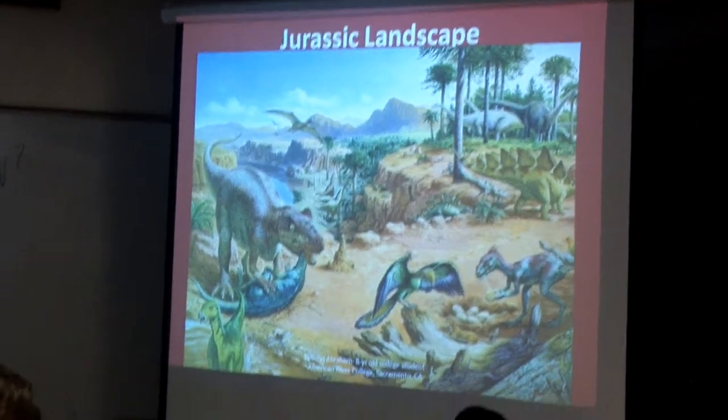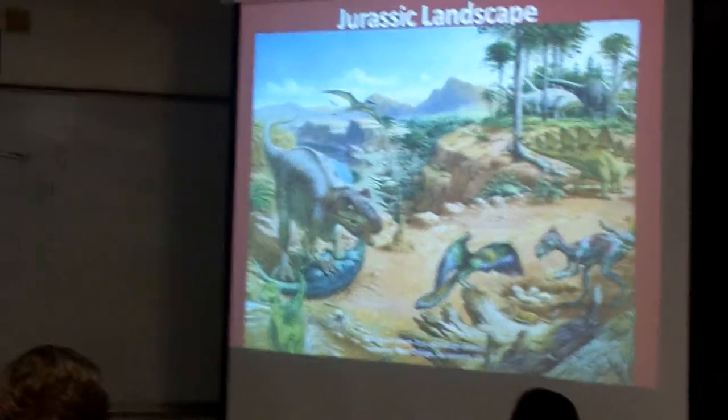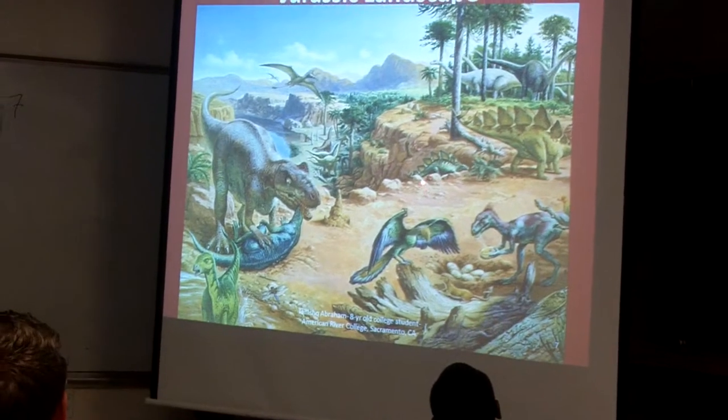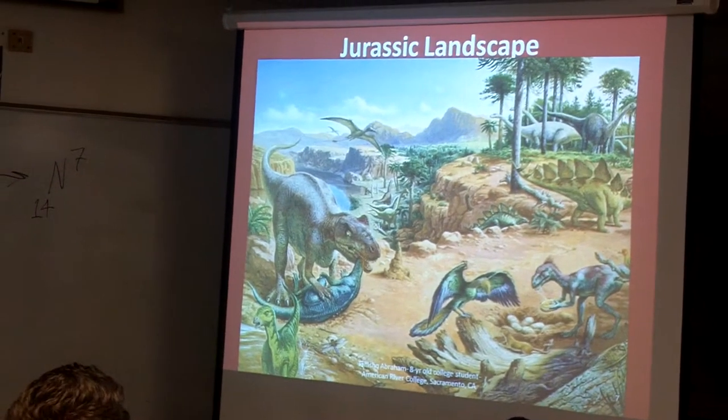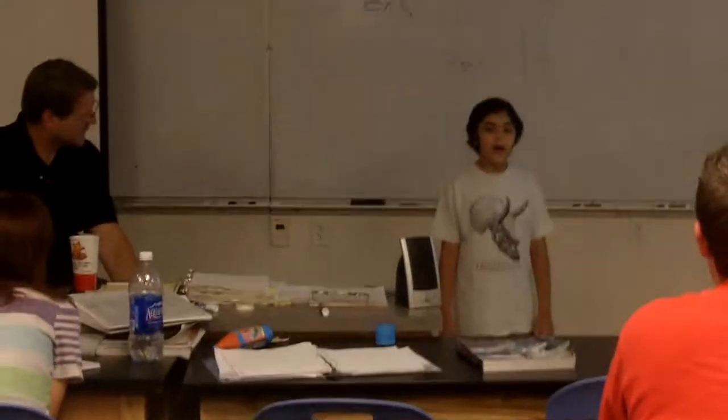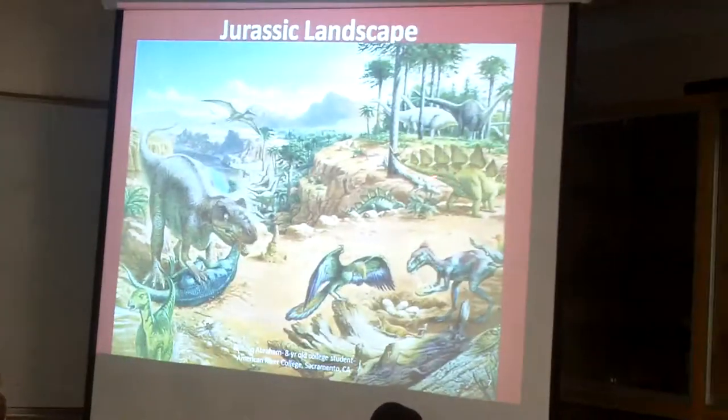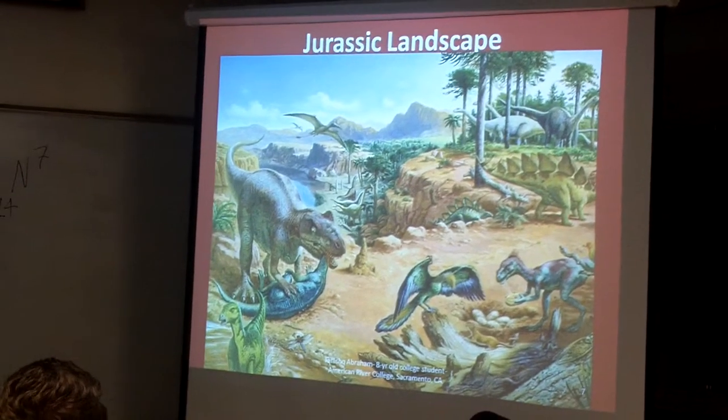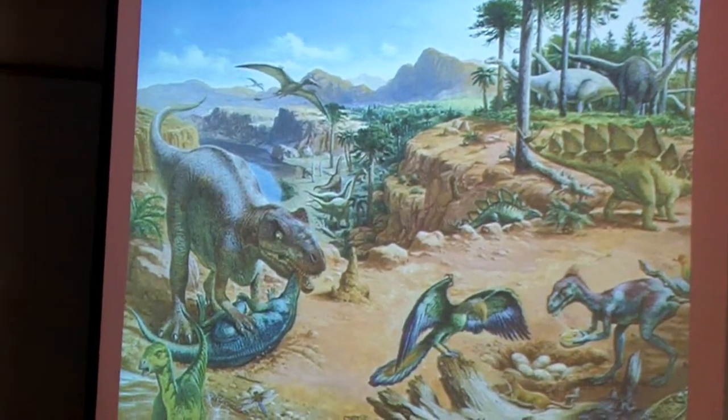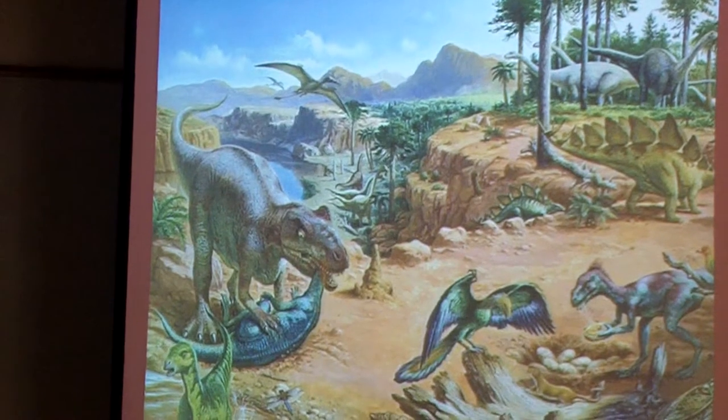So this dinosaur is called Allosaurus, and as you can see it's a meat eater. And this is Archaeopteryx, and these are Stegosaurus. And these are Brachiosaurus dinosaurs. Brachiosaurus dinosaurs actually have their nose on top of their head. And these are Diplodocus dinosaurs. The Diplodocus dinosaurs have a long head and a long neck and a long tail, and they are herbivores. Brachiosaurus are herbivores too. And this thing is not a dinosaur, it's a pterosaur, which I'm going to talk about soon.